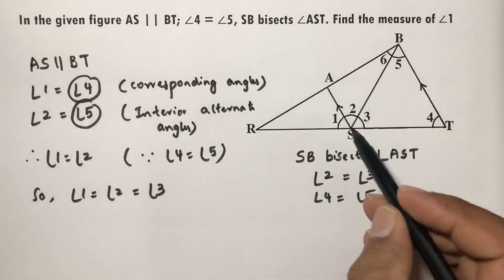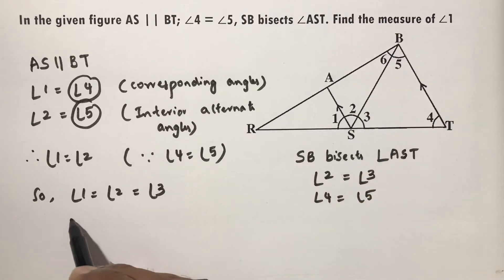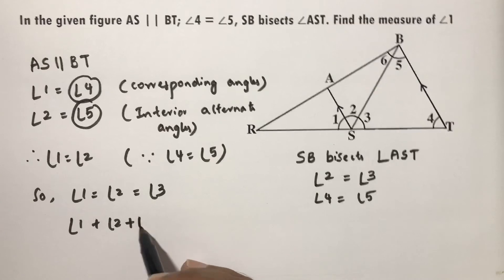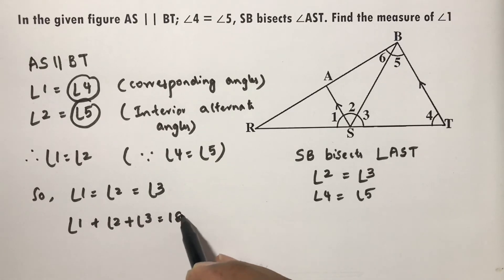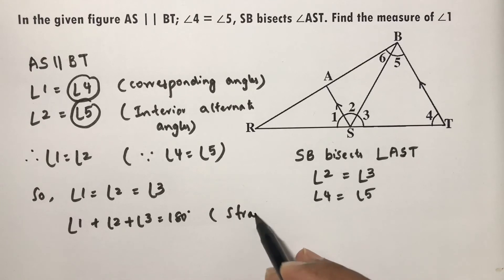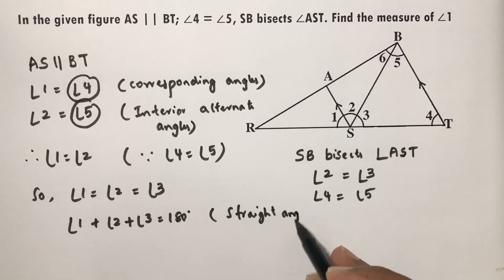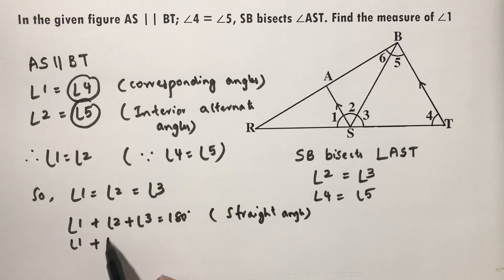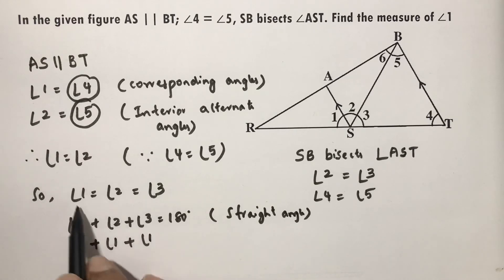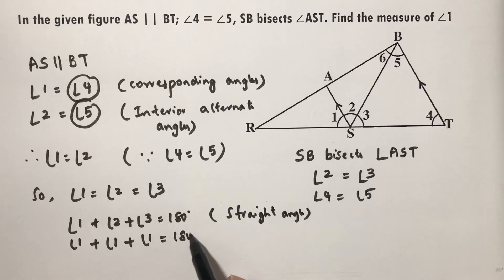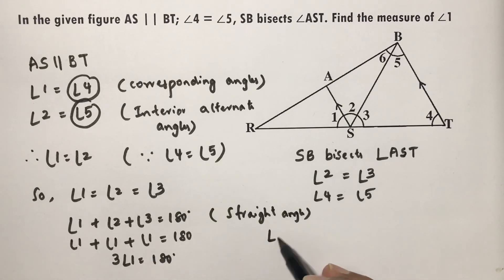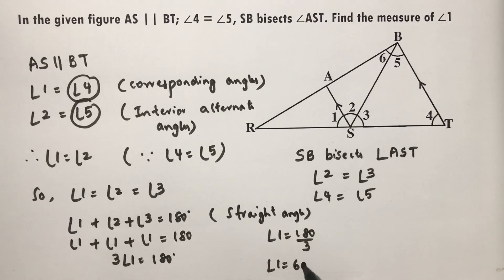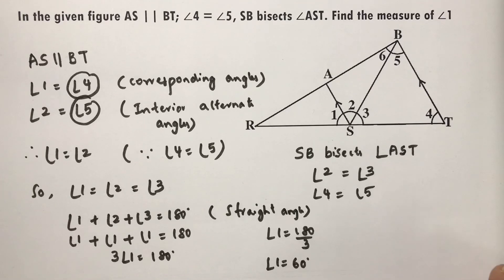Now angle 1 equals angle 2 equals angle 3, and angle 1 plus angle 2 plus angle 3 equals 180 degrees because of a straight angle. Since all three are equal, we can write 3 times angle 1 equals 180 degrees, therefore angle 1 equals 180 divided by 3, which is 60 degrees. So the measure of angle 1 is 60 degrees.